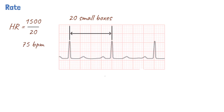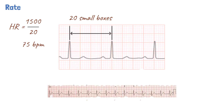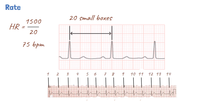The calculation of the heart rate becomes more difficult when there's an irregular rhythm such as atrial fibrillation. Under these circumstances, the rate can be calculated by counting the number of QRS complexes on the rhythm strip provided across the bottom of the ECG and then multiplying this number by 6. For example, in the ECG strip shown, there are 14 QRS complexes in the rhythm strip, which gives 84 beats per minute.